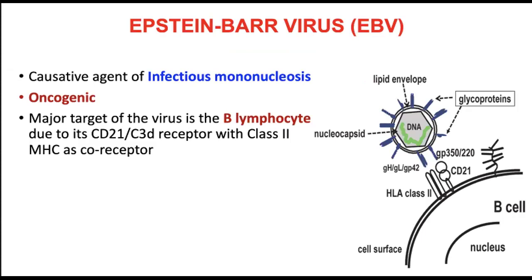The major target of the virus is the B-lymphocyte, particularly because of the type of receptors found on the surface membrane — the CD21 or C3D receptors, with class 2 MHC as co-receptors. So remember, Epstein-Barr has tropism not because they are OA, but because of the specific matching of their glycoproteins with the specific receptors present on the surfaces of their host cells.